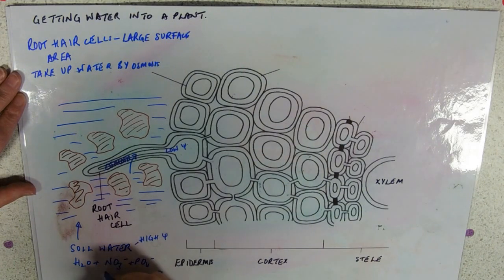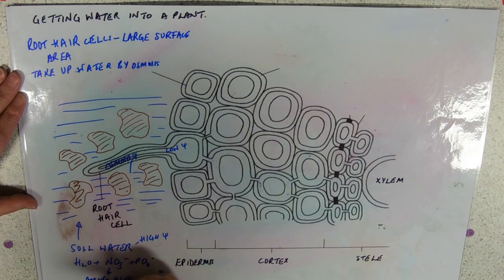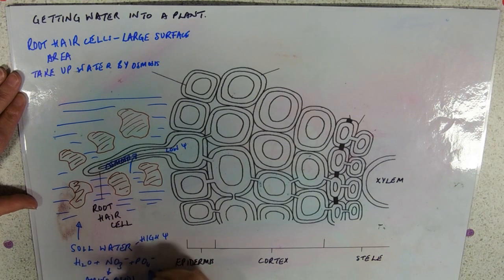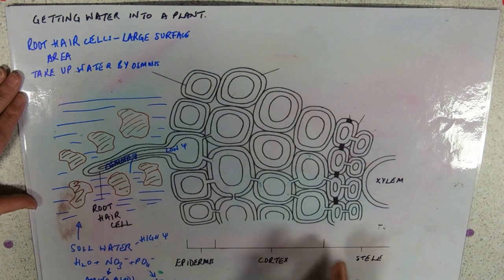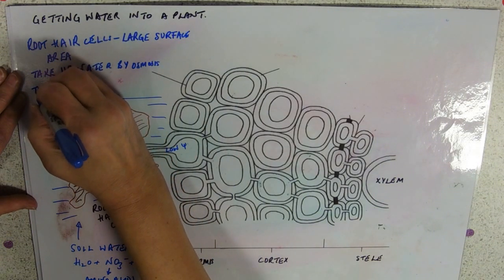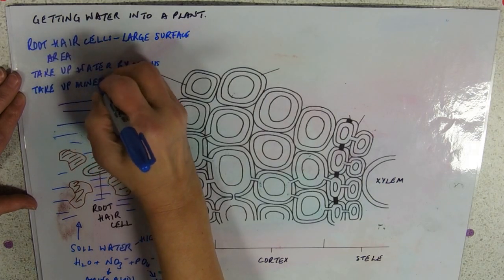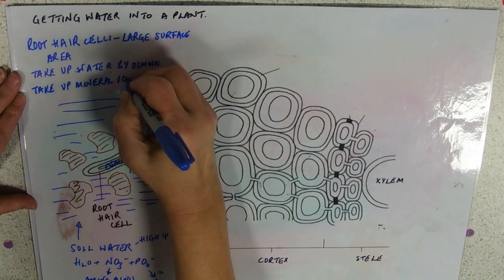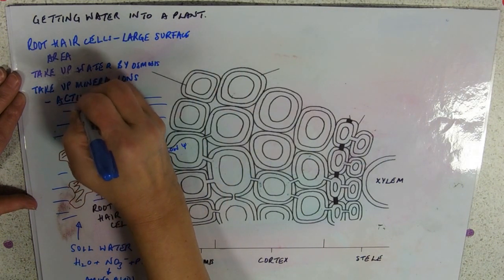And of course plants need mineral ions, so they need nitrate to make amino acids, and they need phosphate to make DNA. So you need phosphate to make nucleotides which contain phosphate. And they take up mineral ions, and these are going against a concentration gradient, so they're active transport.